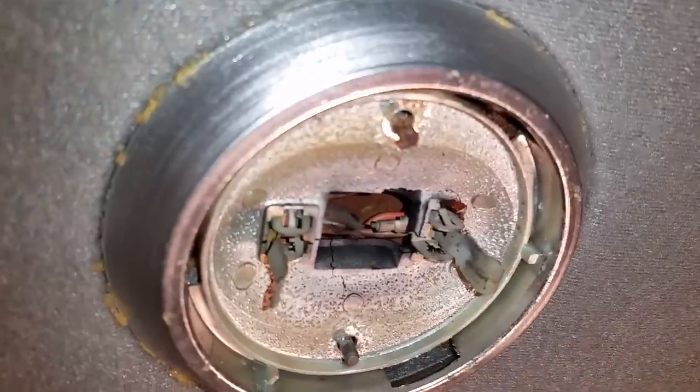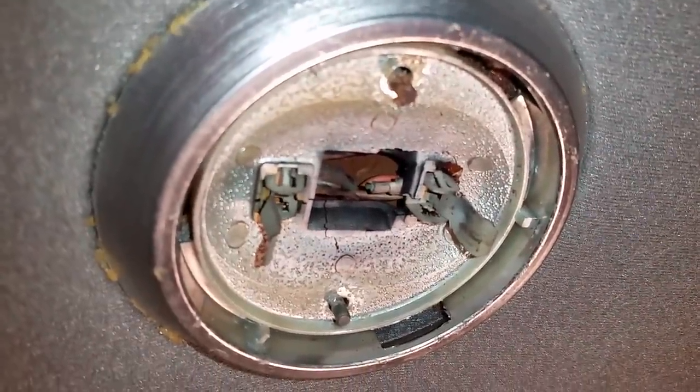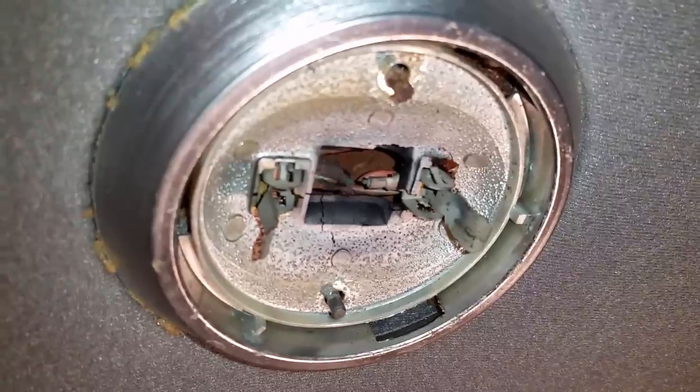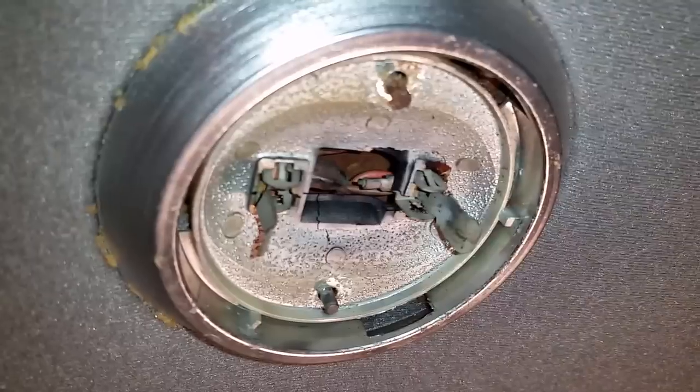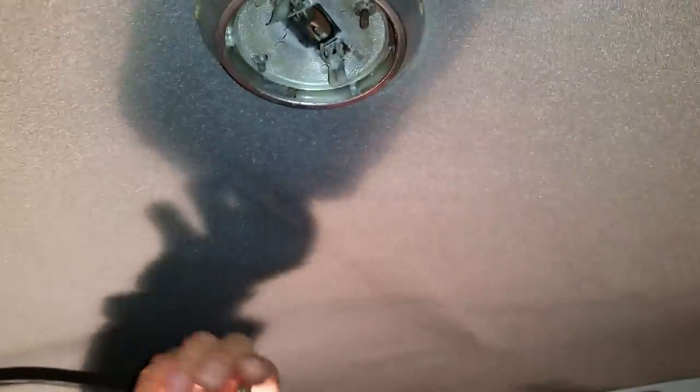Now before doing this you might want to take the fuse off where it says dome light, whatever fuse it controls, so you don't get sparks around here. Alright, so the first thing you do here, you just pop this out. That's the light bulb.